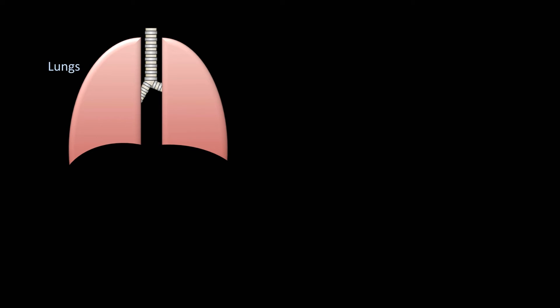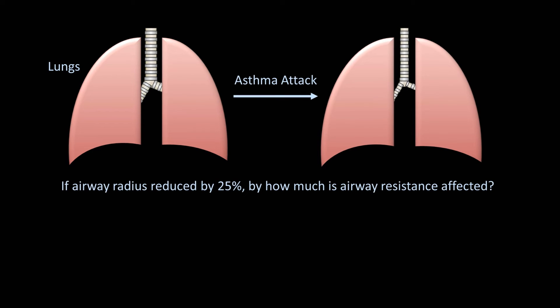Let's see Poiseuille used in a completely different medical context. Here we have a pair of lungs. Air moves back and forth from the outside world and the alveoli in each of the lungs through both the trachea and bronchi. If a patient has an asthma attack and the airway radius is reduced by a modest-sounding 25%, by how much is airway resistance affected?